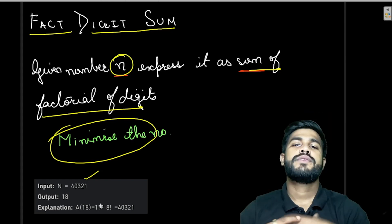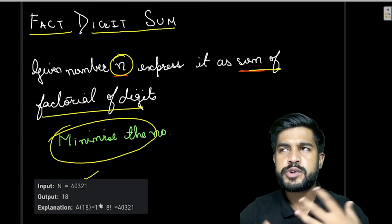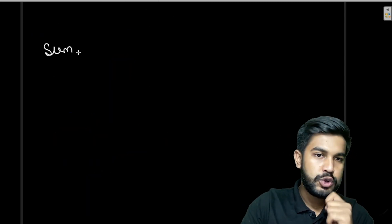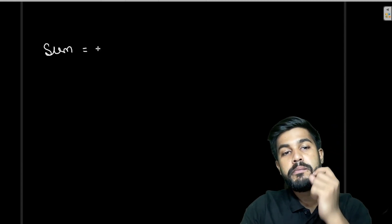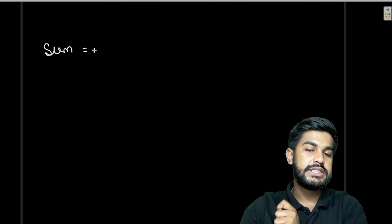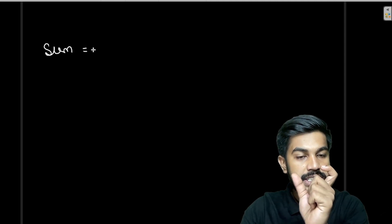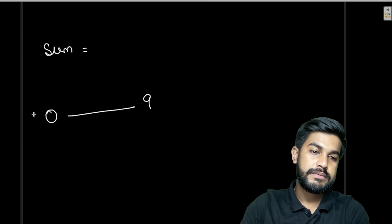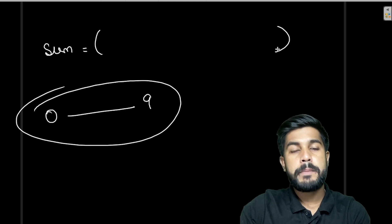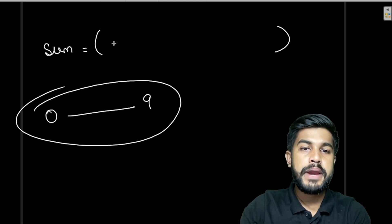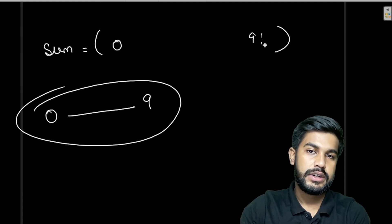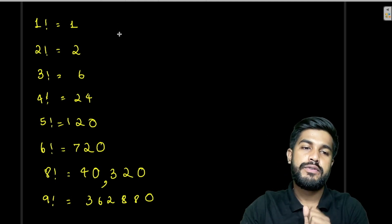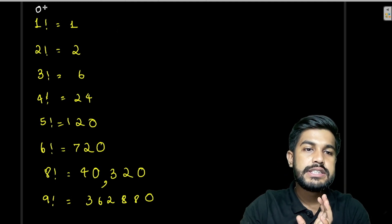To solve this problem, let us think in terms of what values can be added. We need a sum to be achieved made up of factorials of digits. The digits can be from 0 to 9, so we need to make up a value using factorials of 0 through 9. We can precompute all factorials from 1 to 9, and note that 0! = 1.